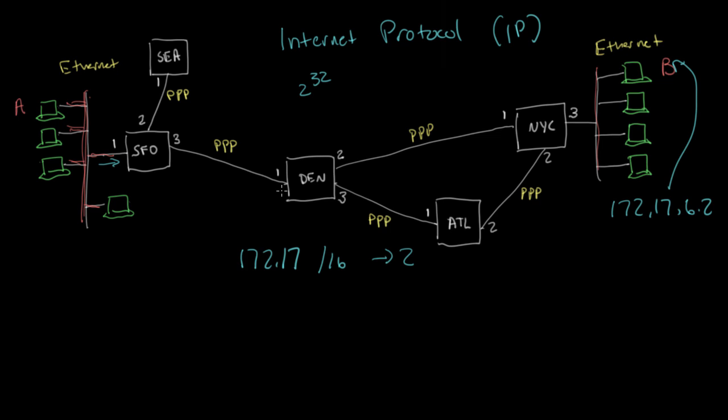So if the router receives an address of 172.17.6.2, or a packet with that as a destination, the router will be comparing this in binary. So what this is in binary, the 172 is 1, 0, 1, 0, 1, 1, 0, 0, that's 172.